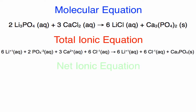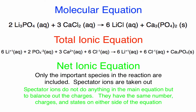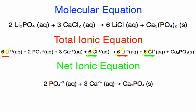From the total ionic equation, you can write the net ionic equation. The net ionic equation only focuses on the ions and species that are really important in this particular reaction. To write this equation, you need to cancel out spectator ions — ions that are exactly the same on both sides, meaning the same state of matter, charge, and number. In this equation, six lithium ions (aq) and six chloride ions (aq) are exactly the same on both sides, so they are canceled out. After canceling spectator ions, the net ionic equation is: two phosphate ions (aq) plus three calcium ions (aq) form one calcium phosphate (s).